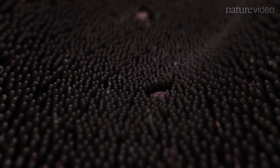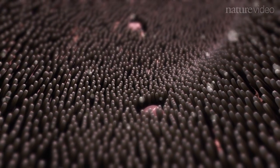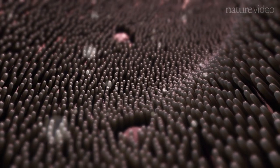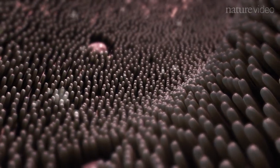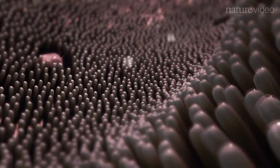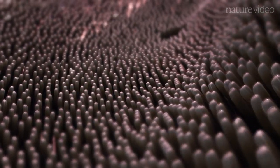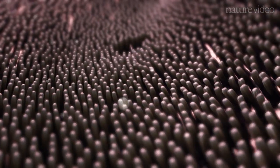The intestinal surface is covered with finger-like protrusions called villi, whose primary function is the absorption of nutrients. However, these structures and the underlying tissues also host the body's largest population of immune cells.